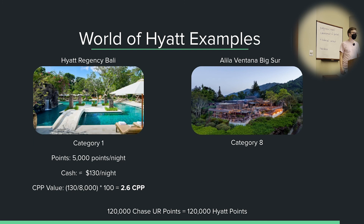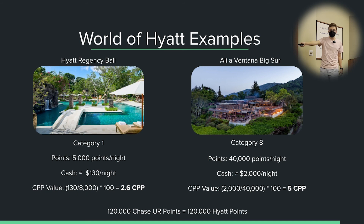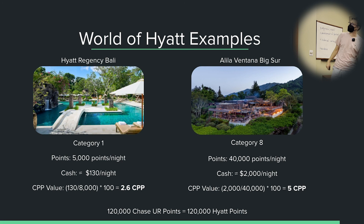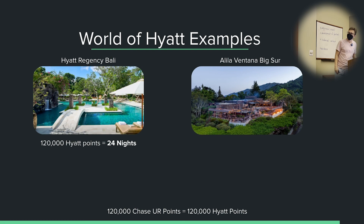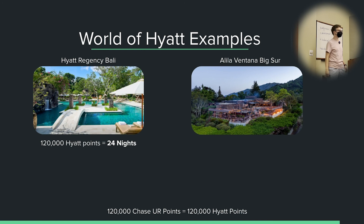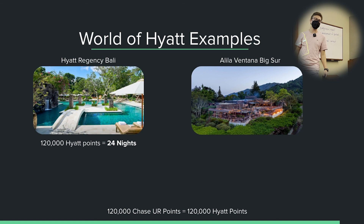On the other end of the spectrum, we have Alila Ventana Big Sur — a Category 8 hotel that just got upgraded. The points cost here is 40,000 Hyatt points per night for a standard rate night. The cash price is around $2,000 a night — honestly pretty conservative. Dividing cash by points cost, that's a rate of 5 cents per point — very, very good. Yes, this is skewed a bit because would we actually pay $2,000 a night? No. But that's the point — I couldn't pay $2,000, that's why it's cool and fun to do this.